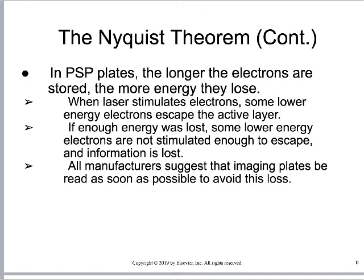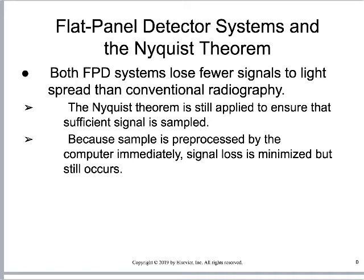In a PSP system there's an even greater chance for mis-sampling, because not only do we have the conversion problem, but after exposing a CR cassette it starts to lose that information — the crystals spontaneously give off their energy. The longer a cassette sits without being scanned by the laser, the more signal it loses. This is one of the reasons we're moving away from computed radiography. Both PSP and digital flat panel systems are still better than conventional radiography in this regard.